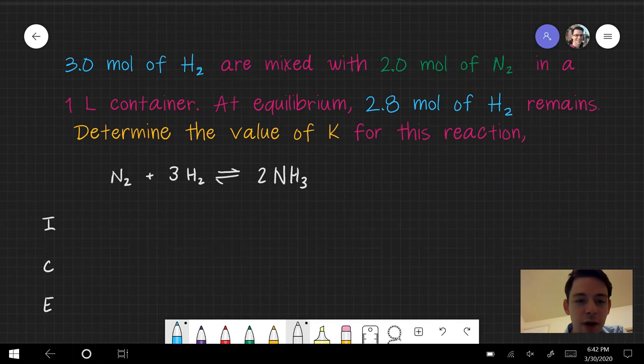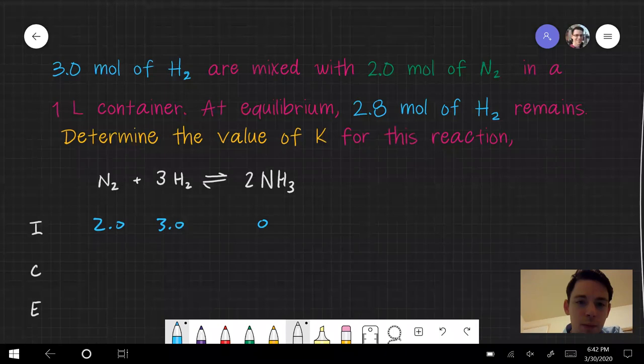Okay, so let's look at our initial values. We have two moles of N2 and three moles of H2 and no ammonia to start.